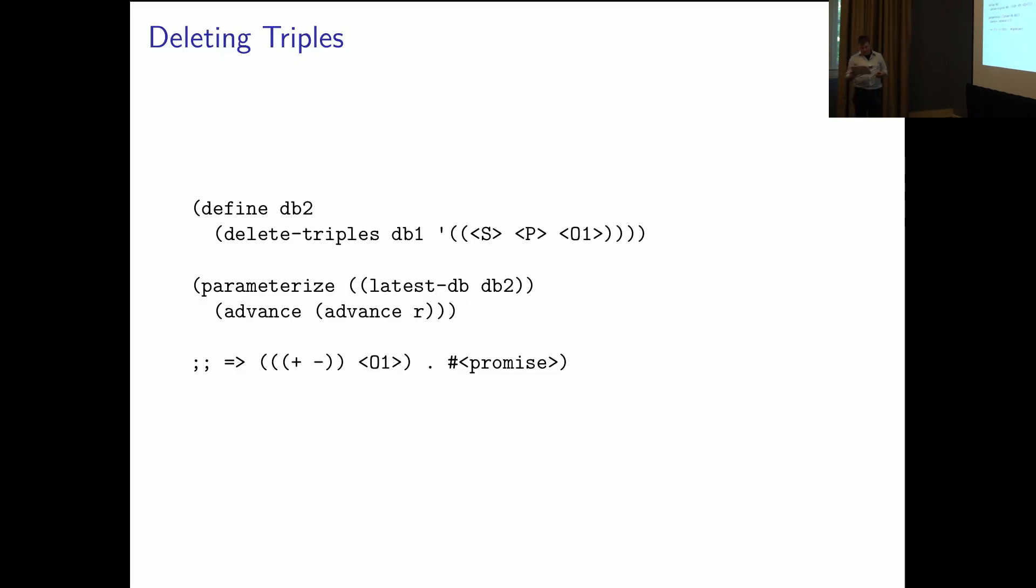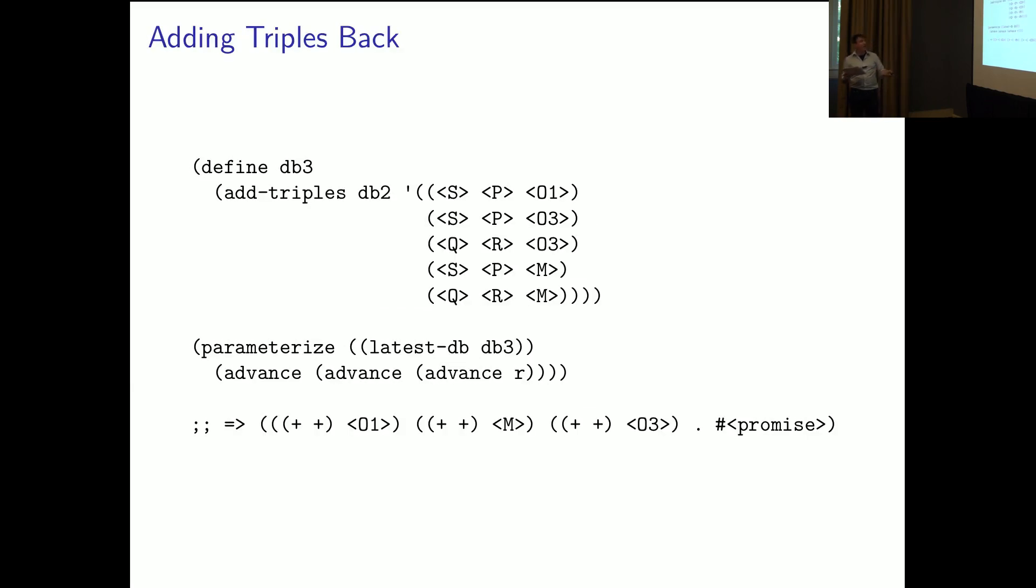If we add that triple back along with some new solutions, we'll get positive deltas coming out. And so, here we've been proceeding linearly, but since the database states are persistent, we can calculate deltas over any two states. And keeping track of a stream of states and indexing them on time gives us a truly time-traveling data store.